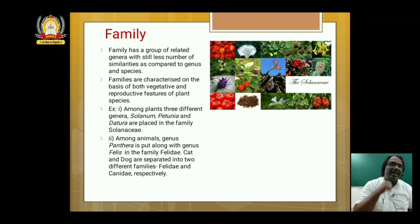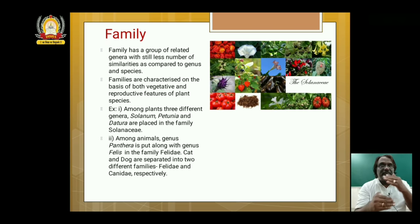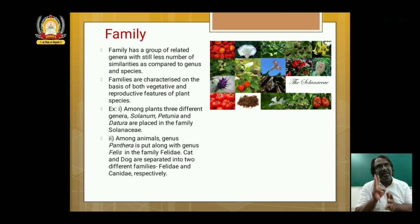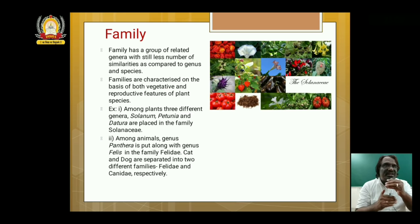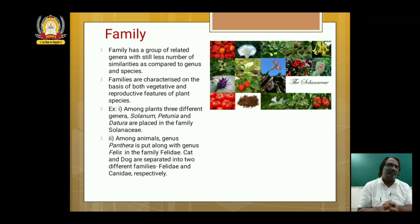In the same way in animals, genus Panthera — where we come across lion, leopard and tiger — is put along with genus Felis in the same family Felidae, which has both cats and Panthera. Dog has a different family called Canidae. Wild cat and dog are separated into different families — the cat family is Felidae, whereas the dog family is Canidae.